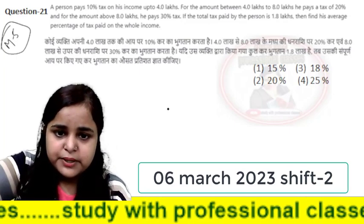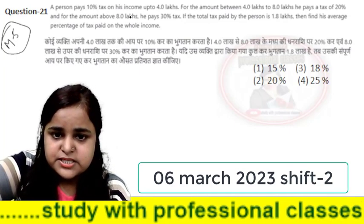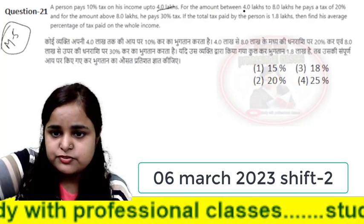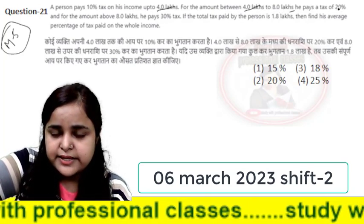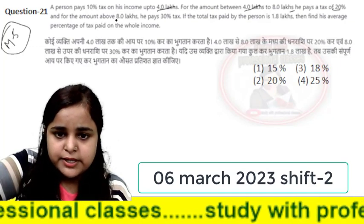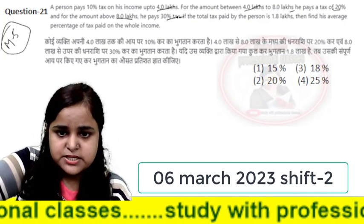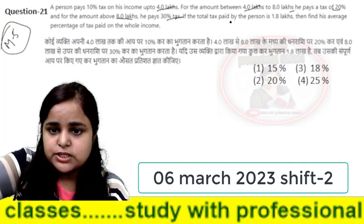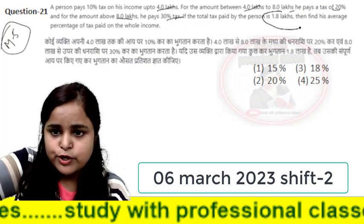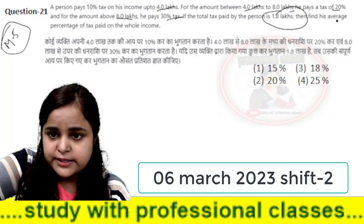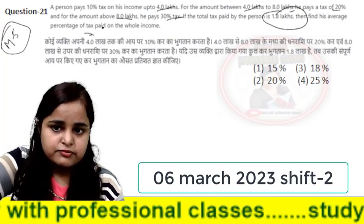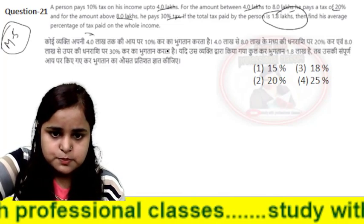If a person pays 10% tax on his income up to 4 lakhs, for the amount between 4 lakhs to 8 lakhs he pays 20% tax, and for the amount above 8 lakhs he pays 30% tax. If the total tax paid by the person is 1.8 lakhs, then find the average percentage of tax paid.